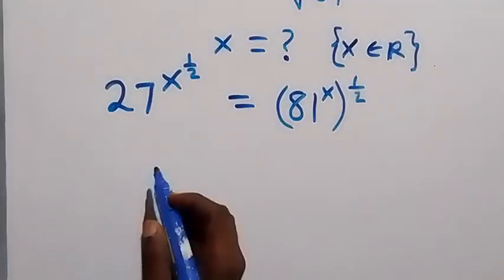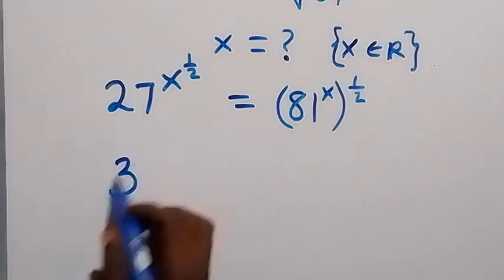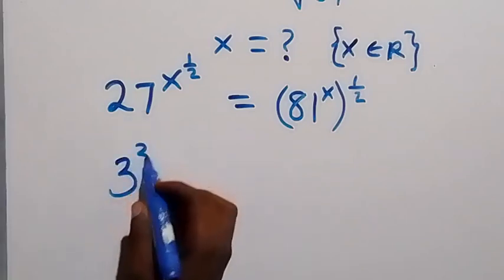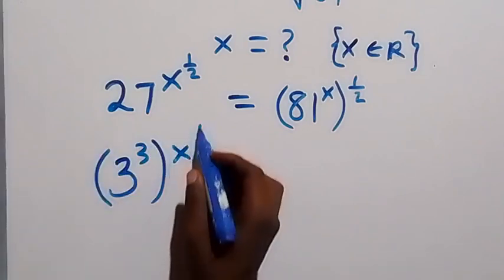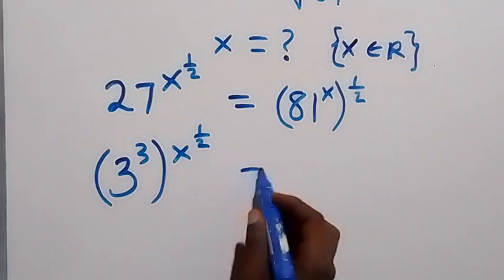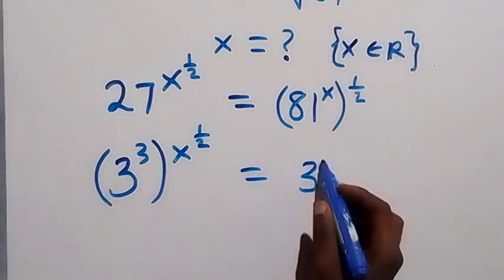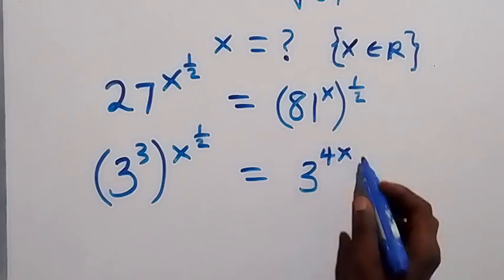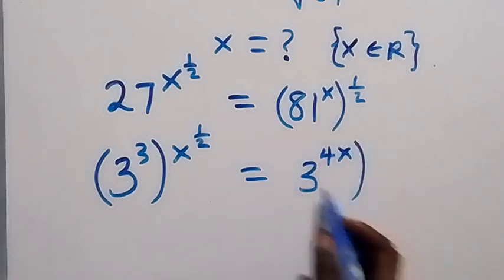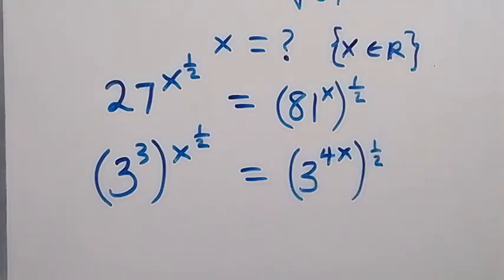Now let's change 27 to base 3. We have 3 raised to power 3, raised to power x, then raised to power half, equals 81 which can be written as 3 raised to power 4, and we have x here — that's 4x — then raised to power half.